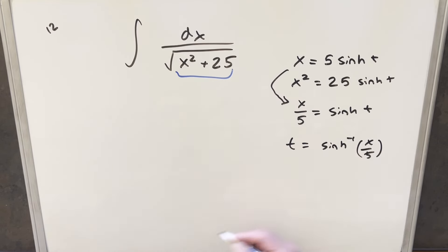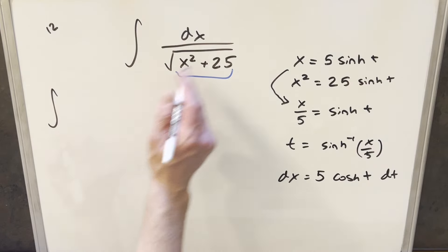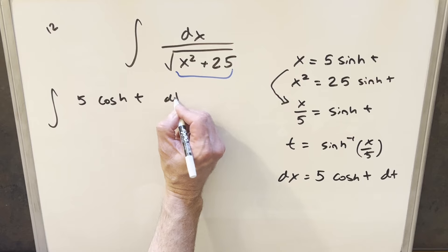And then last, let's take a derivative and get our dx value. So coming down here, we'll have dx, derivative of this is going to give me 5 cosh t dt. So we'll just go ahead with this. For our dx value, we'll bring this over here in the numerator, so 5 cosh t dt.